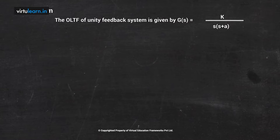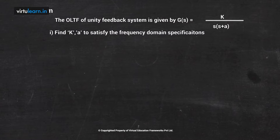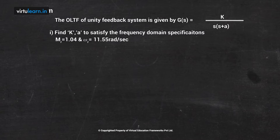The first part of the problem: find k and a values to satisfy the frequency domain specifications — Mr is 1.04 and omega_r is 11.55 radians per second.